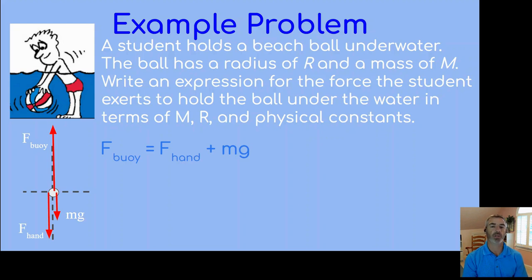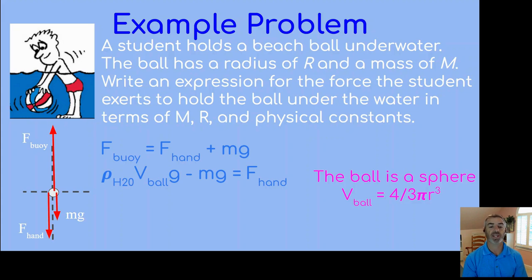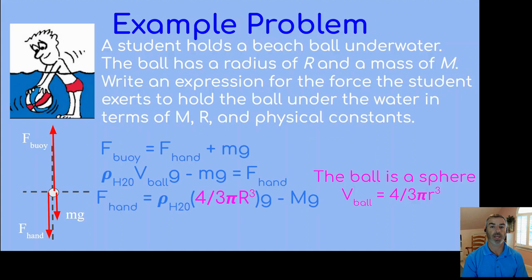The buoyant force is calculated as the density of the water times the volume of the ball (the volume of water displaced) times g. We subtract mg to solve for the force of the hand. We can't use v in the final expression, so we use the sphere volume formula: four-thirds pi r cubed. Substituting in, the force of the hand equals the density of water times four-thirds pi r cubed times g, minus mg. We're allowed to use m and r, and physical constants — the density of water, pi, and g — so our expression is complete.